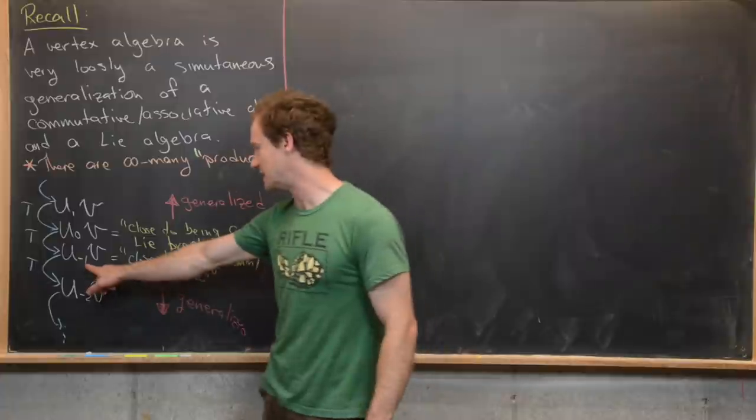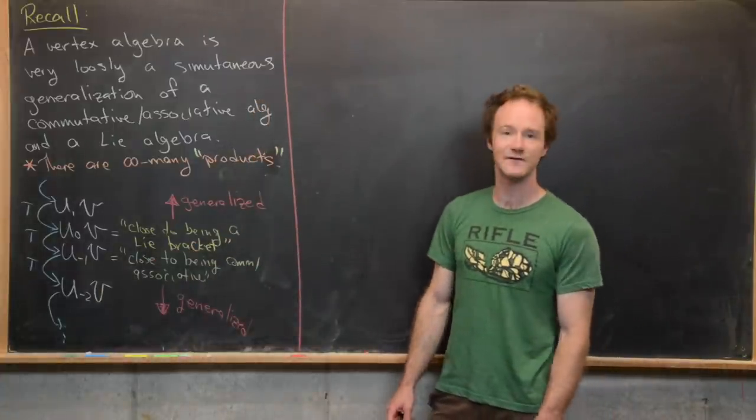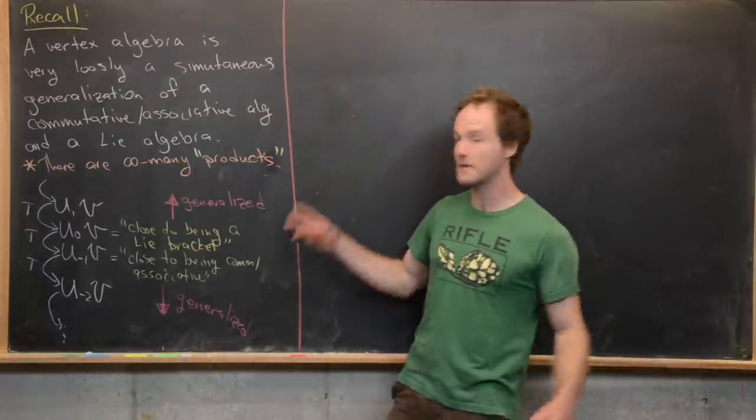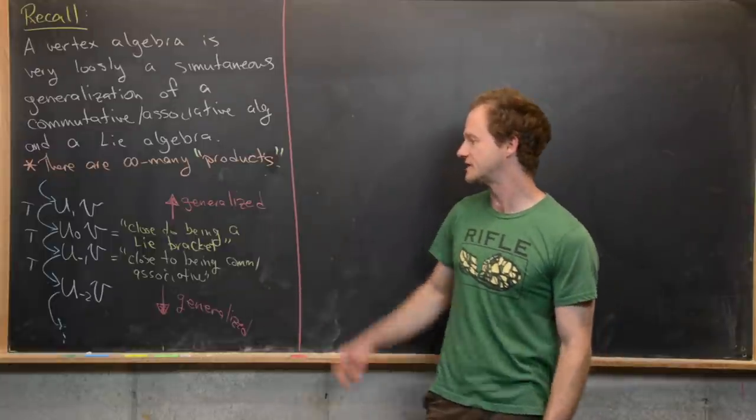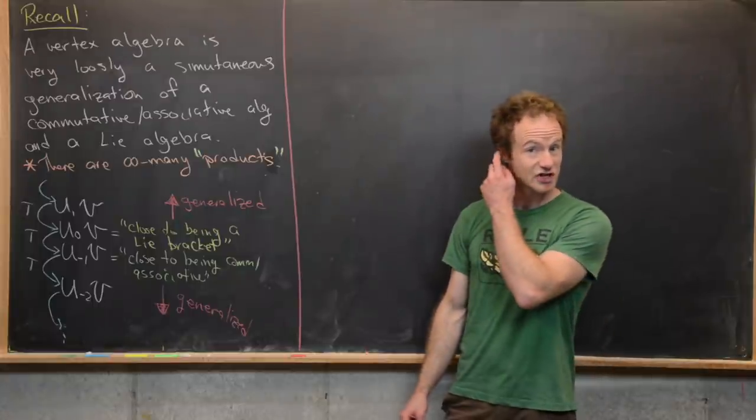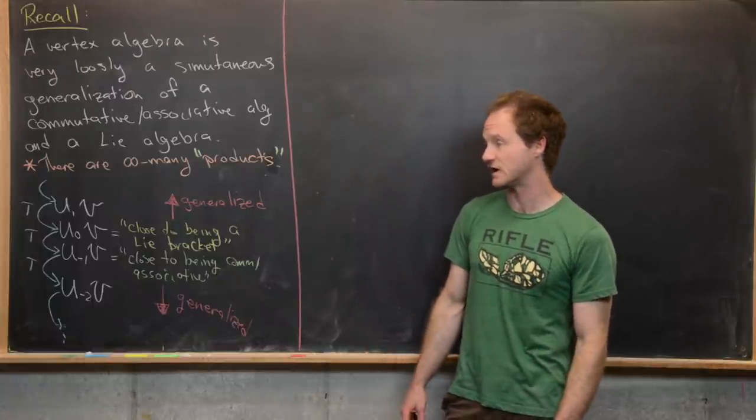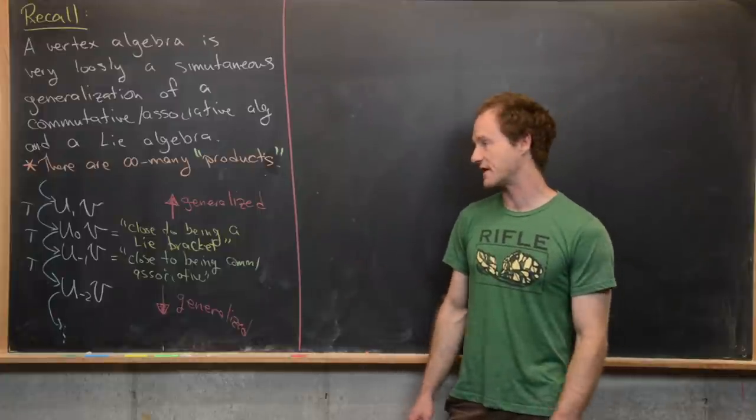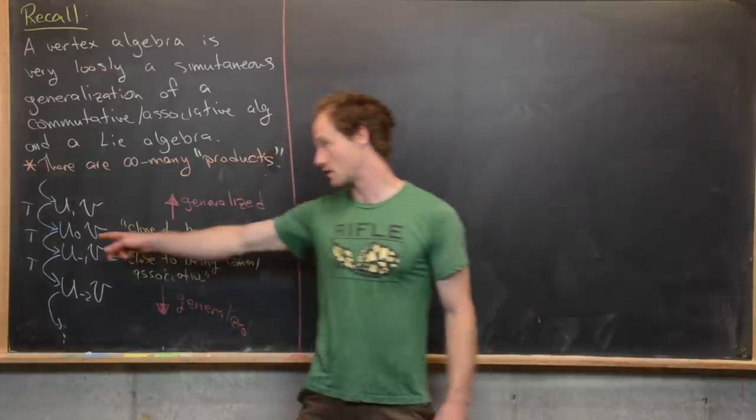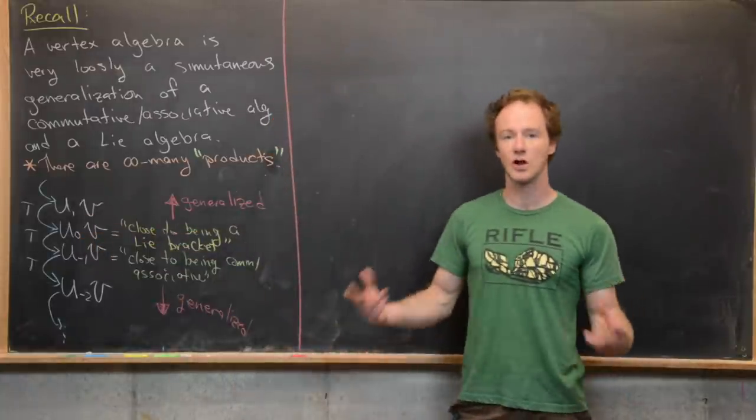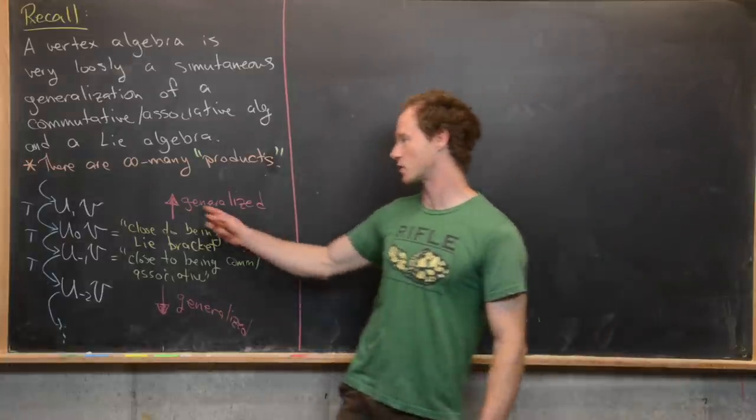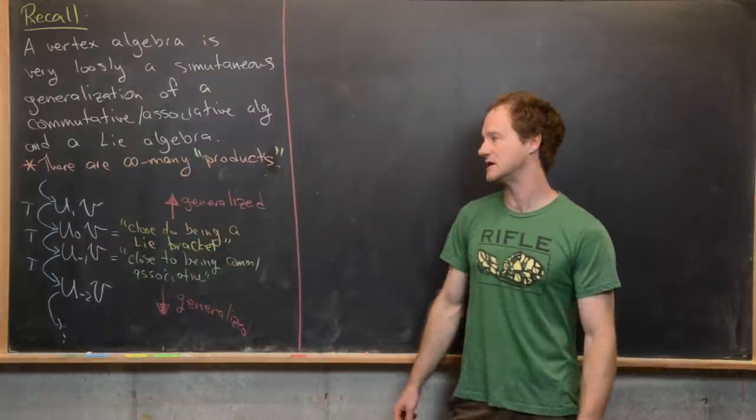So here we can have the negative first multiplication of u and v which we denote with this subscript minus one here. And that's actually the multiplication that is closest to endowing this with the structure of a commutative associative algebra. And actually in some cases you do get a commutative associative algebra but those cases are generally not that interesting. Then next this zeroth multiplication which we denote like u₀v that is the closest that endows this with the structure of a Lie algebra. So in other words that operation is very close to being a Lie bracket.